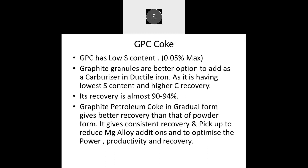Now we will talk about GPC, that is graphite petroleum coke. GPC has lower sulfur content — above 0.05%. Graphite granules are a better option as a carburizer in ductile iron production, as they have the lowest sulfur content and higher carbon recovery of about 90 to 94%. Graphite petroleum coke in granular form gives better recovery than powder form. It gives consistent recovery and carbon pickup, so that magnesium alloy addition can be reduced and power consumption, productivity, and carbon recovery can be optimized.